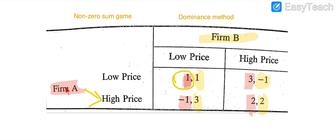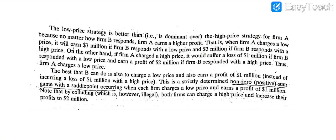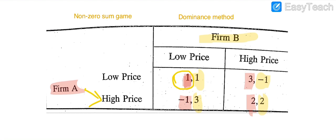When Firm A plays one strategy there will be two options — low price or high price — depending on the choice of Firm B's strategy. All these payoffs represent the situation of a non-zero-sum game with a saddle point occurring when each firm charges a low price, earning a profit of 1 million. This will be the case you can see in the figure.